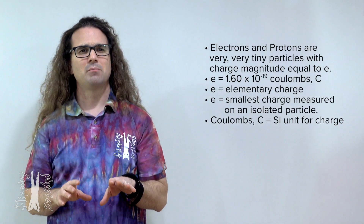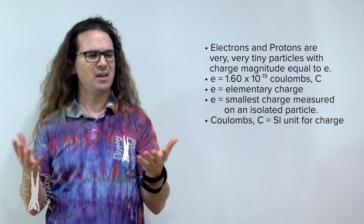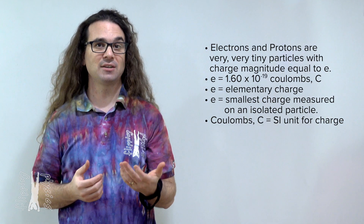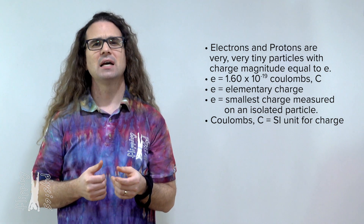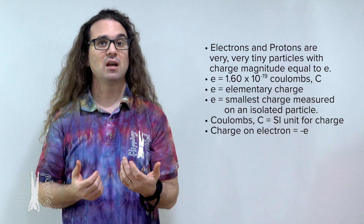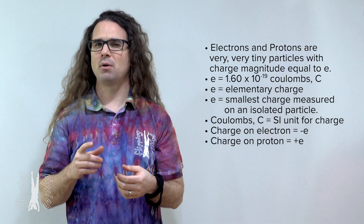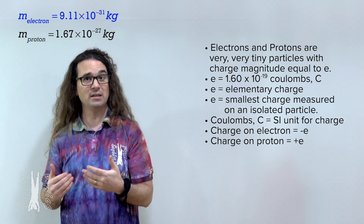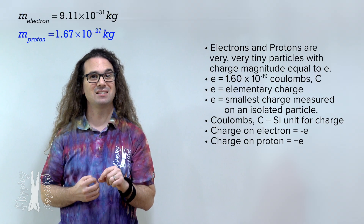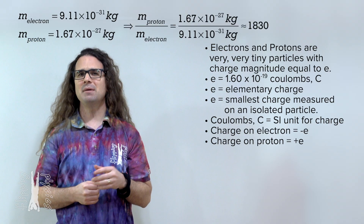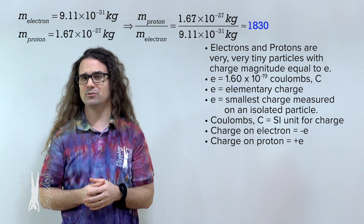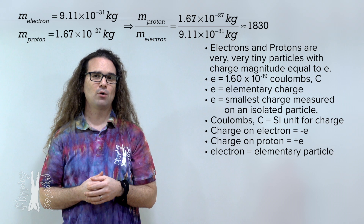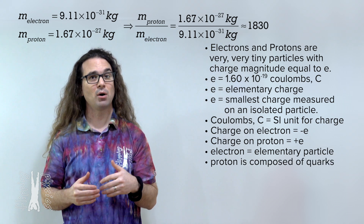Electrons and protons both have the same magnitude charge, 1.60 times 10 to the negative 19 coulombs. However, the charge on an electron is negative and the charge on a proton is positive. Their masses are very different: the mass of an electron is 9.11 times 10 to the negative 31 kilograms, and the mass of a proton is 1.67 times 10 to the negative 27 kilograms — meaning the mass of a proton is almost 2000 times greater than the mass of an electron. Also, an electron is an elementary particle, but a proton is not because it is composed of quarks.